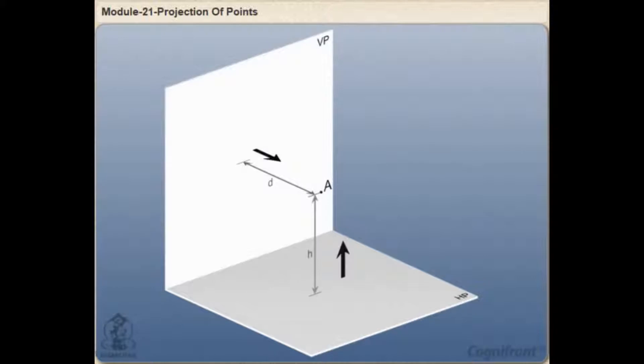An observer is looking at the point in the direction of the arrow. The front view will be a point A dash on VP and its top view will be A on HP, obtained by projectors drawn from the given point A.